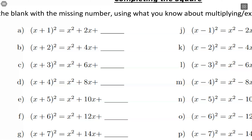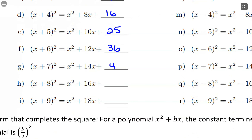So 1 squared is 1, 2 squared is 4, 3 squared, 4 squared, 5 squared, 6 squared, 7 squared, 8 squared, 9 squared. And we could keep going on — we don't have to stop at 9 — but this is good enough for our video here.